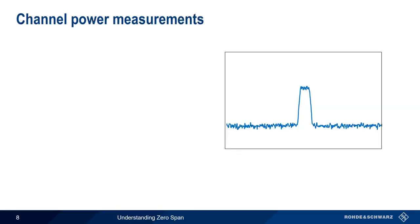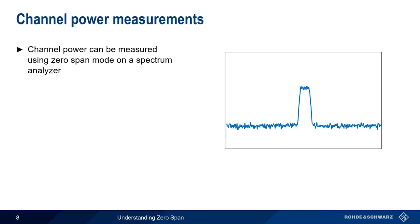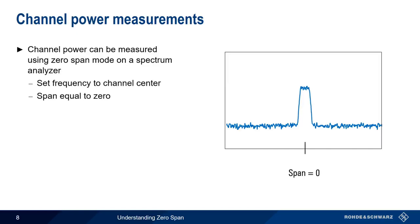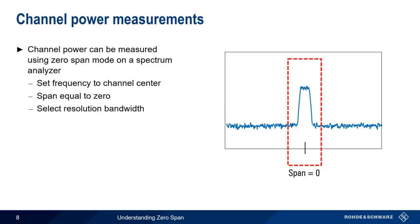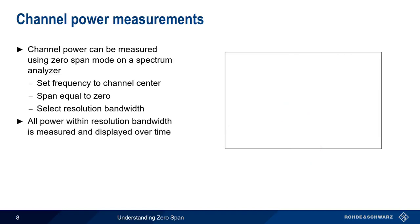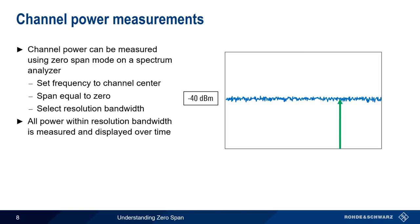Another way we can use Zero-Span is to make channel power measurements. We set the analyzer to the center frequency of the channel, enter Zero-Span mode, and select our resolution bandwidth. The analyzer measures the power within the resolution bandwidth, and channel power is shown as a line on our display. Power can be read off manually or using a marker. And remember that because we're measuring power, we need to use the RMS detector.